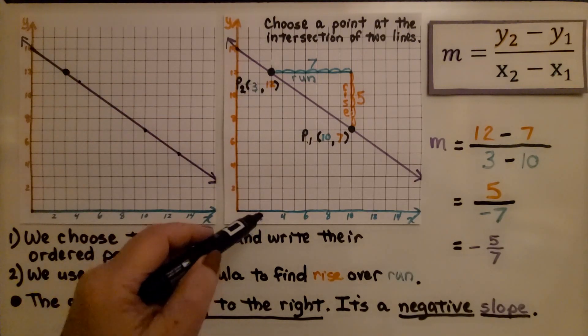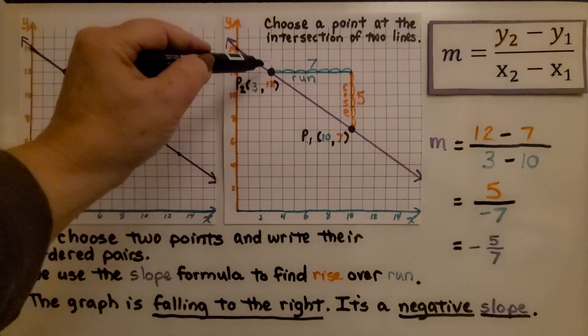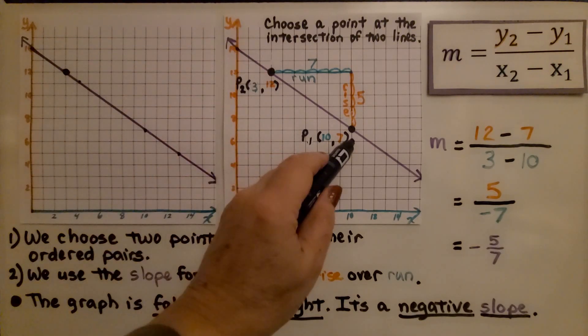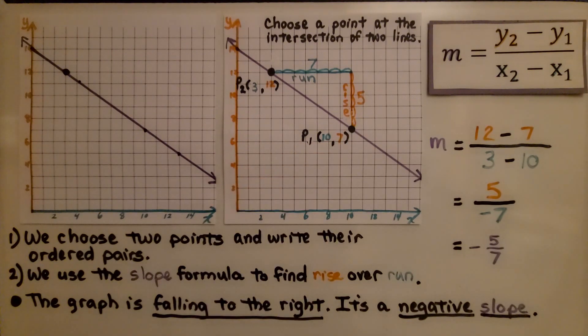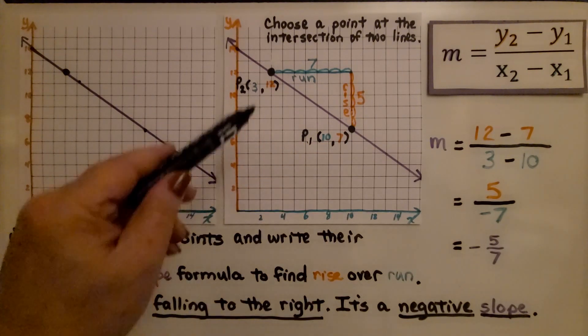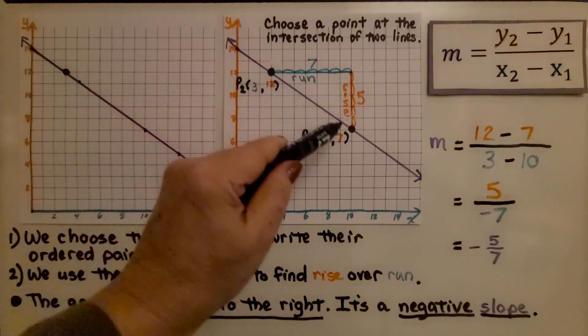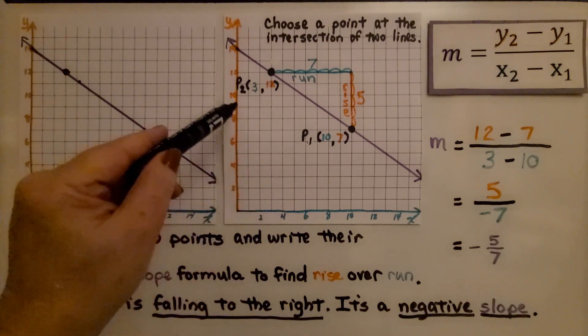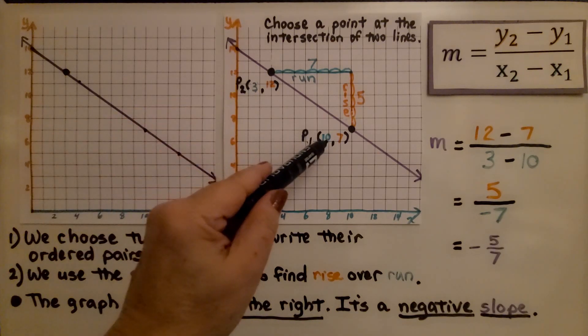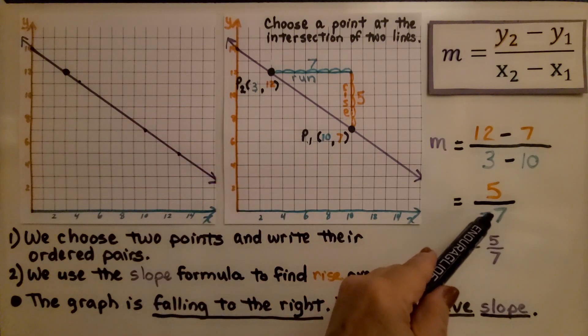So I chose 3, 12 for our second point and 10, 7 for our first point. We're going to do the slope formula, and we're going to do the second y minus the first y, which is 12 minus 7. I get a 5. And the second x minus the first x, I get a negative 7.